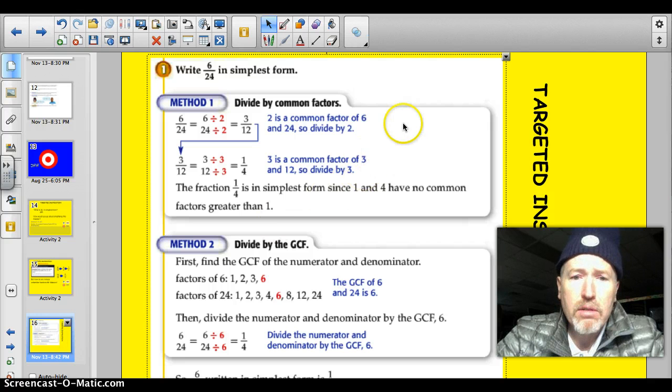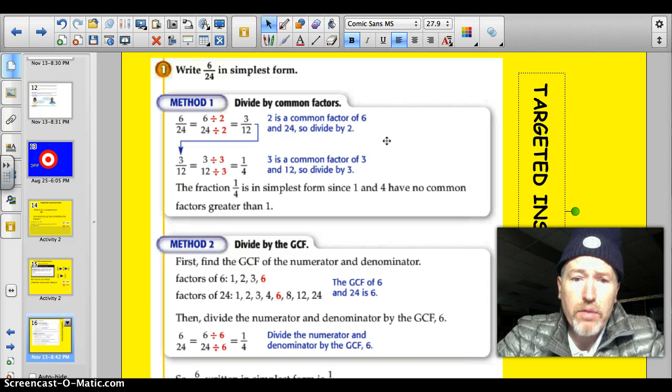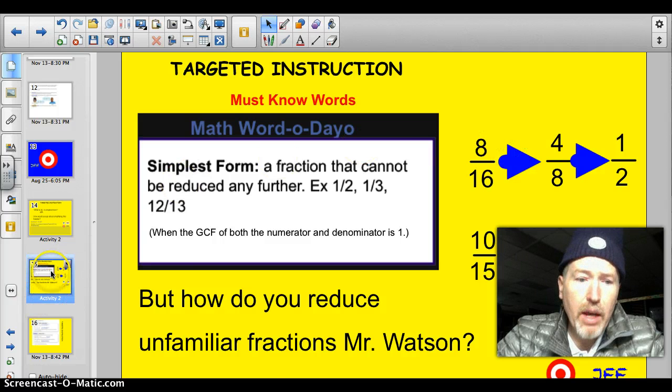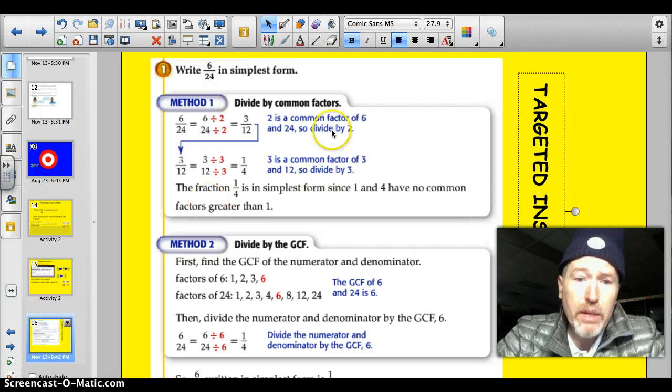The book actually has a very nice page in it that does a good job of explaining two different methods. First of all, just dividing by common factors. That's what I did in that first example here. I just went ahead and I divided right by 2, and then I divided by 4. Look what the book did. They said, we've got 6/24.